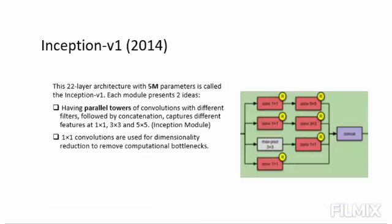Inception V1 2014. This 22-layer architecture with 5 million parameters is called the Inception V1. This is done by means of Inception modules. The design of the architecture of an Inception module is a product of research on approximating sparse structure.